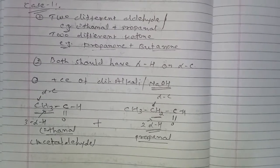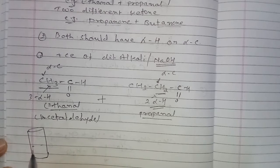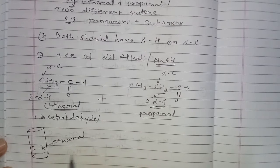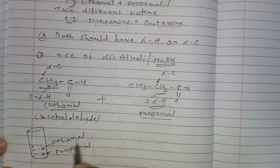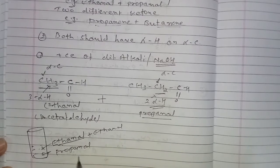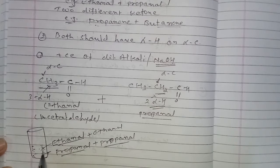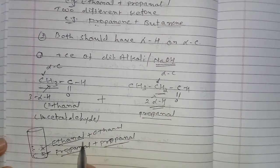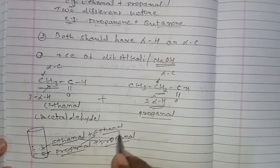Because the reaction is carried out with a mixture of ethanol and propanol — or propanol and butanol — in a test tube there are millions of molecules present. So ethanol can react with ethanol, propanol can react with propanol, ethanol can react with propanol, and propanol can react with ethanol — giving four possible combinations.